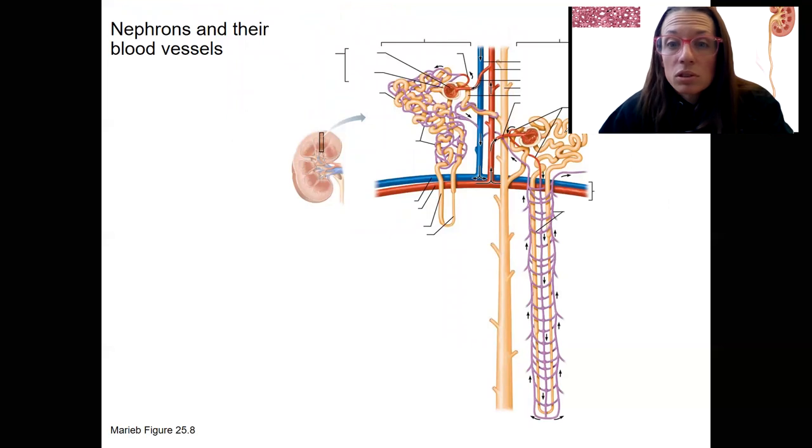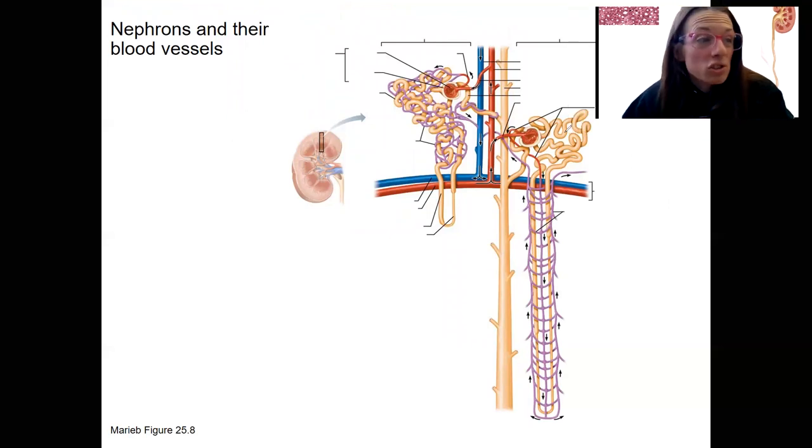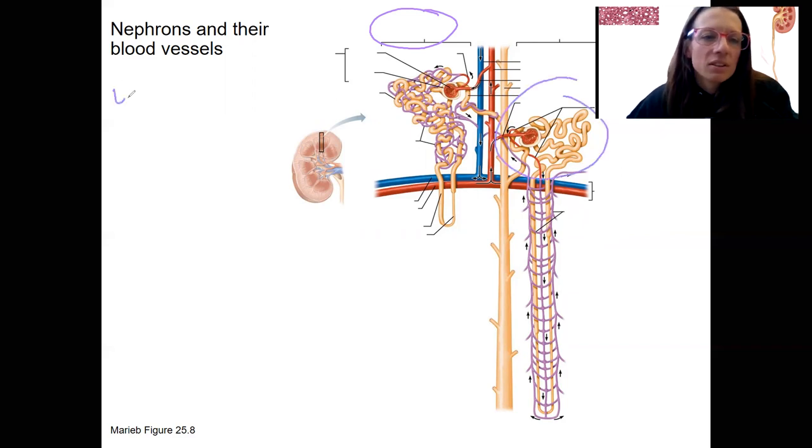This view looks different, but it's actually the same picture you just saw. Add in a learning check here. I believe we're on four. What is the name of this nephron and the name of this nephron? Learning check, I think it's number four.